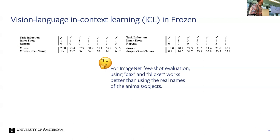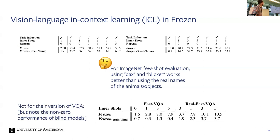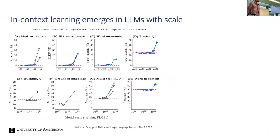This is quite interesting because Frozen was trained on captioning, so you'd expect it to benefit from knowing this is a lion. But apparently it doesn't, and this motivates ongoing research. For the visual question answering dataset, however, you still get non-zero performance.